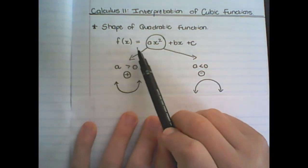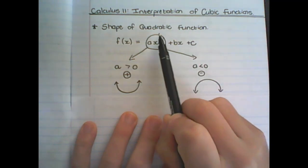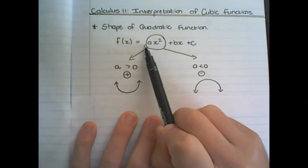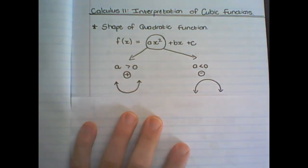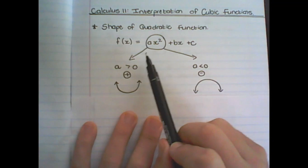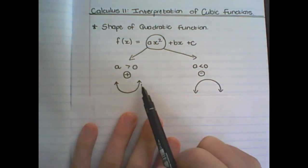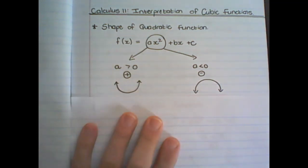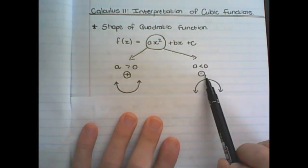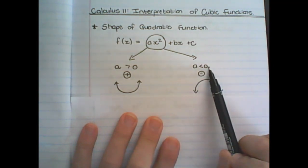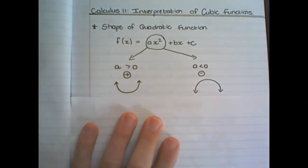Here we have f(x) equals ax squared plus bx plus c. In the previous grades we learned to look at the value of a to determine the general shape of the graph. So if a was bigger than zero, meaning positive, we would have a smiley-type parabola. And when the a value in front of the x squared was negative or smaller than zero, we had a frowny, upside-down parabola.